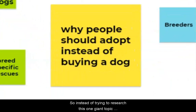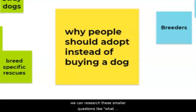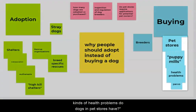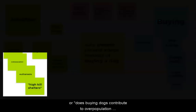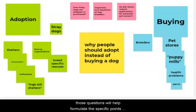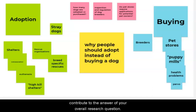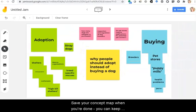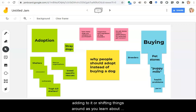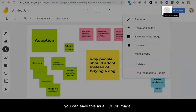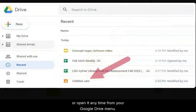So instead of trying to research this one giant topic like why adopting a dog is better than buying a dog, we can research these smaller questions like: what kinds of health problems do dogs in pet stores have? Or does buying dogs contribute to overpopulation in shelters? Exploring and answering those questions will help formulate the specific points you want to make in your main body paragraphs and contribute to the answer of your overall research question. Save your concept map when you're done — you can keep adding to it or shifting things around as you learn about your topic. In Google Jamboard, you can save this as a PDF or image, or open it any time from your Google Drive menu.